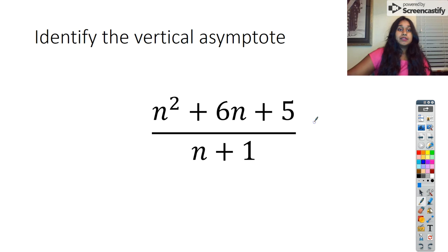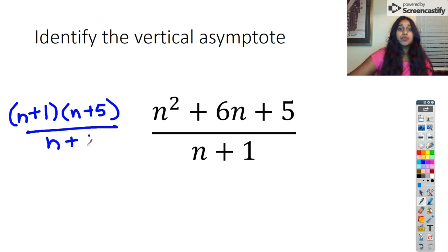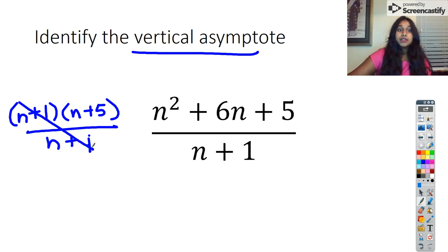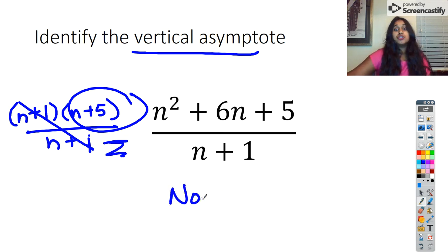We have another vertical asymptote. Here we have N plus one times N plus five all over N plus one. It's asking for the vertical asymptote. I cancel, but instead of dealing with the canceled factor — that's only for a hole — I look at what's left over. What's left over is only in the numerator. There's nothing left in the denominator, which means there is no vertical asymptote.